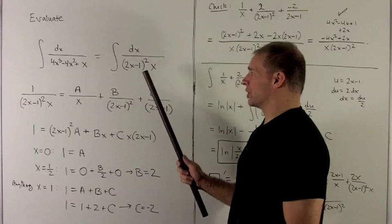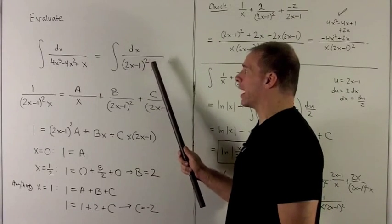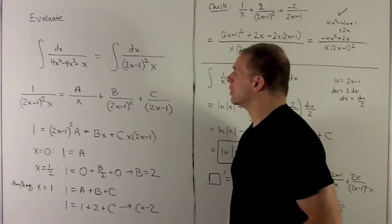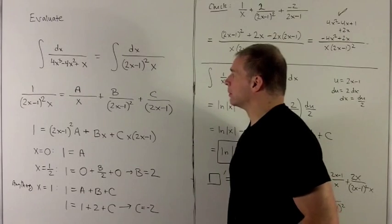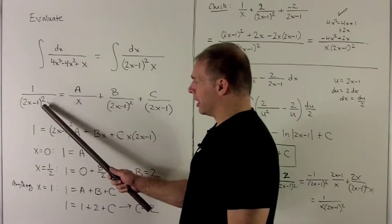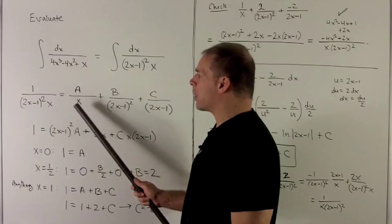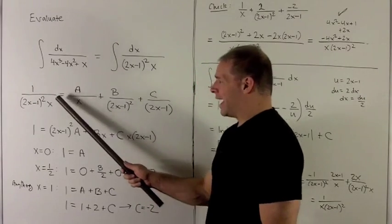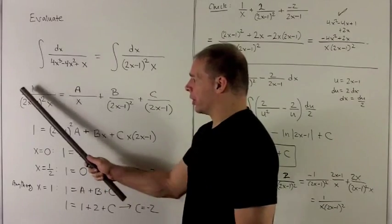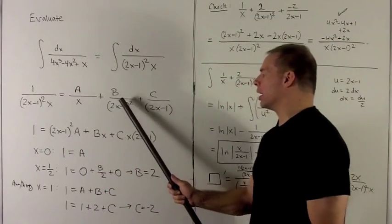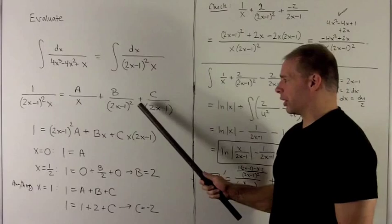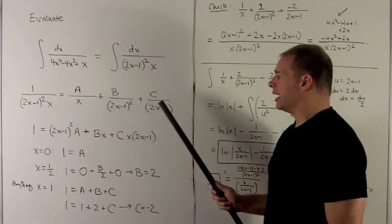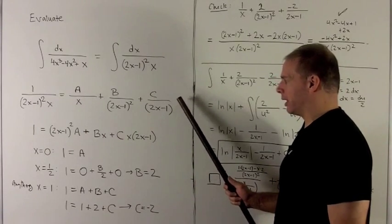When you factor this, this is going to turn into 2x minus 1 squared times x. So what we have to do here is the linear factor that appears with no power just gets its own term, give it a constant a, and then for the power term we're going to start with the highest power and just let it trail off. So I'm going to have a square here and I'm going to have just the power of 1 and then we run out.